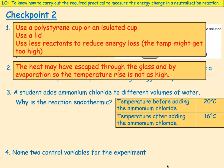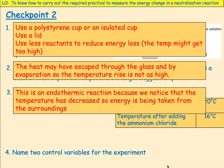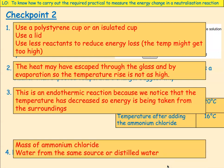The student adds ammonium chloride to different volumes of water. Why is the reaction endothermic? The reaction is endothermic because the temperature has decreased, so energy has been taken in from the surroundings. Two control variables for the experiment: the mass of ammonium chloride, and water from the same source or use distilled water.